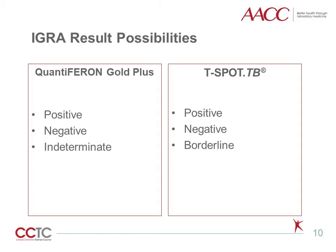IGRA results always need to be interpreted in clinical context, as false positive and negative results can always occur. Generally, patients with a positive IGRA should be further evaluated for active TB, which may include taking a detailed history of TB exposure, evaluation of signs and symptoms of TB, a chest radiograph, and/or sputum culture. Patients in whom active TB is ruled out should be considered for treatment of latent TB infection.